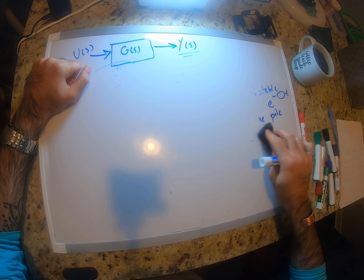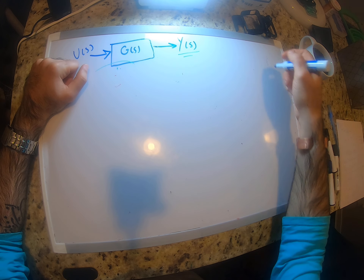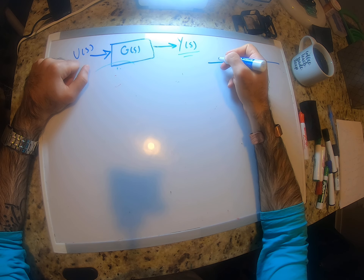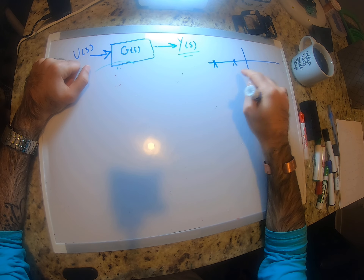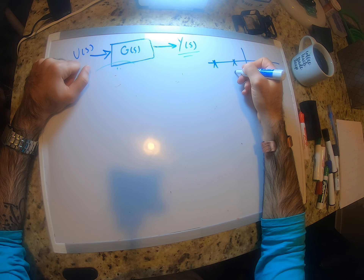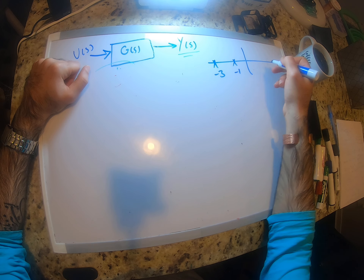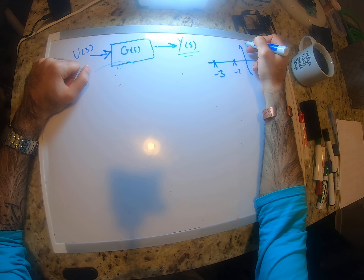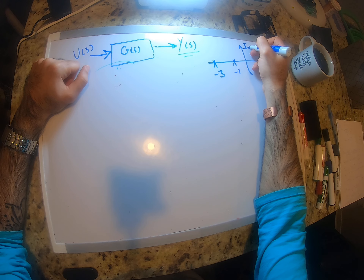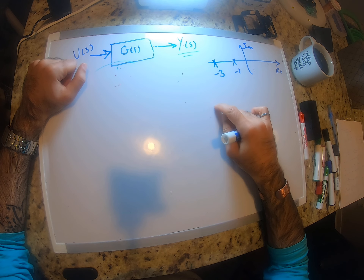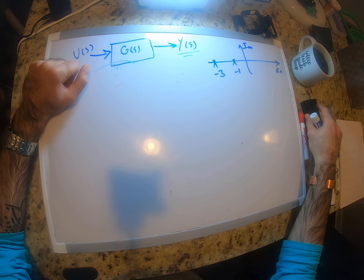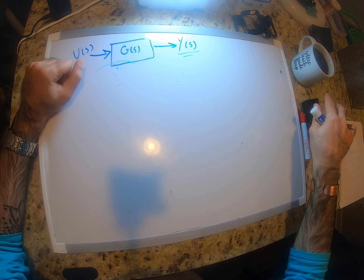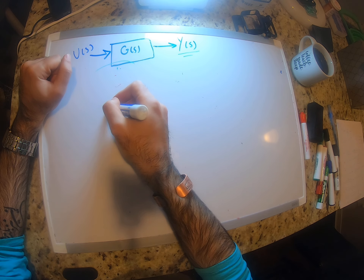In the previous example, both poles were purely real — they only had real values on the real axis with no imaginary component. Now let's look at another example involving complex poles.